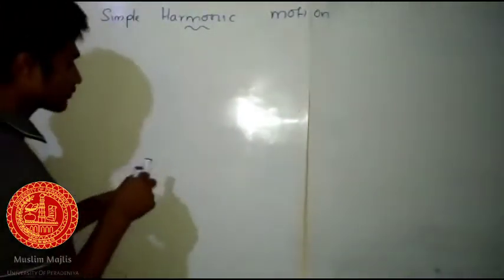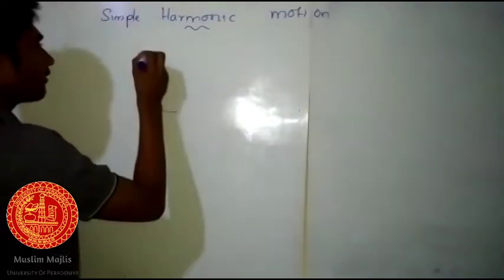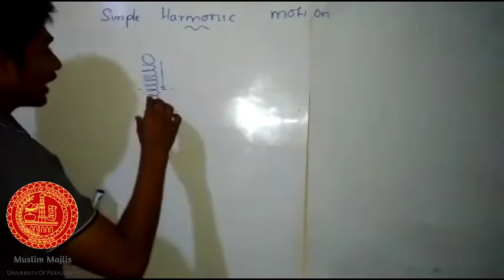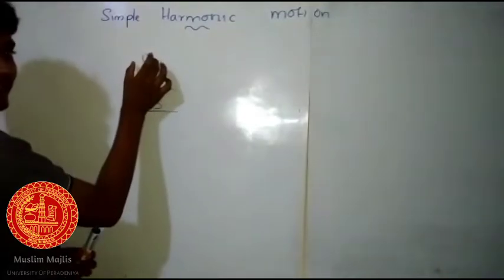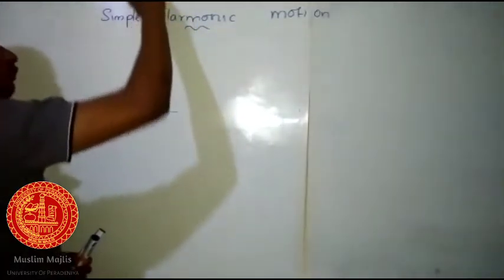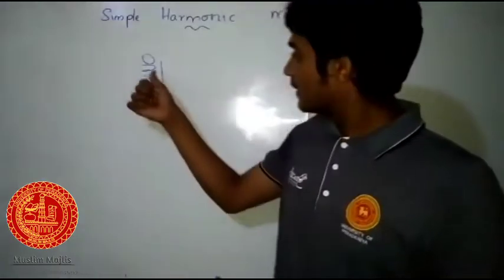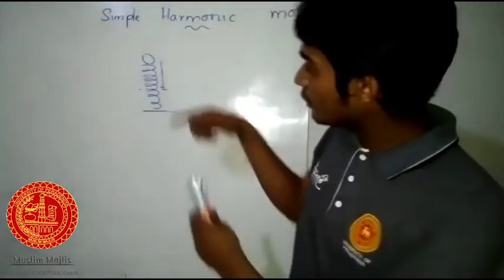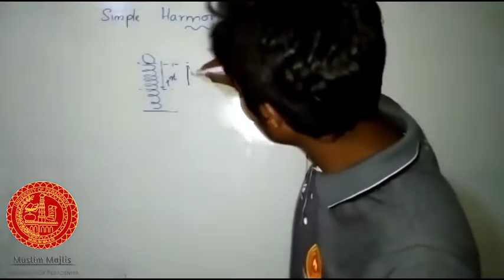Suppose I have a spring-like structure — a spring with a ball. If I displace this ball downward and leave it, it's going to go down, come back up, and this motion is going to continue. The extension of the spring goes down, but even if you consider the equilibrium point, the positive x direction is downward. The acceleration — x double dot — is upward.